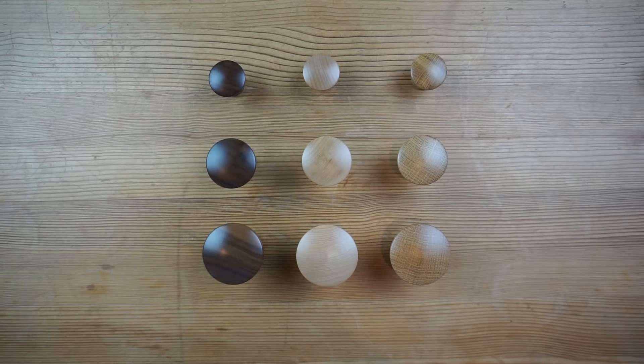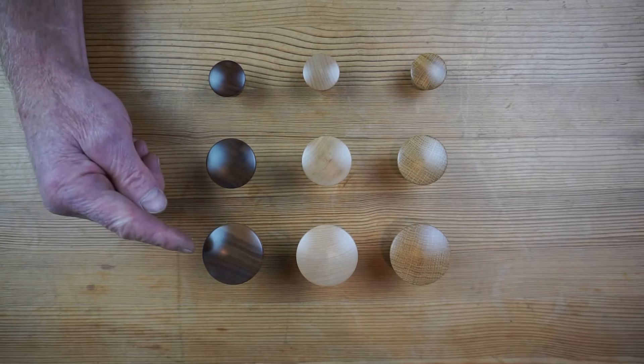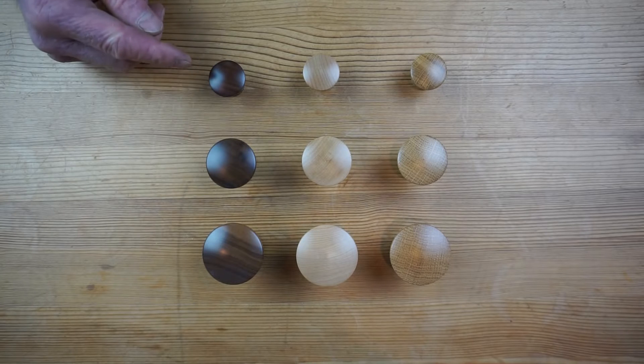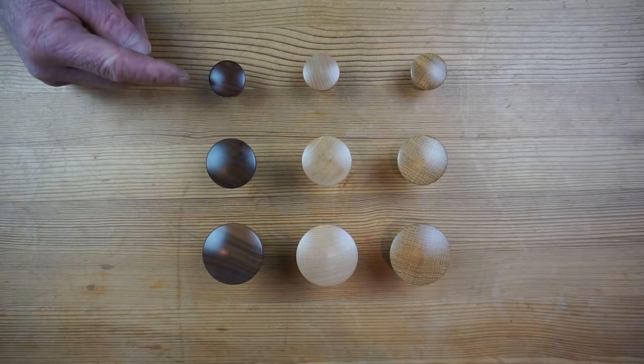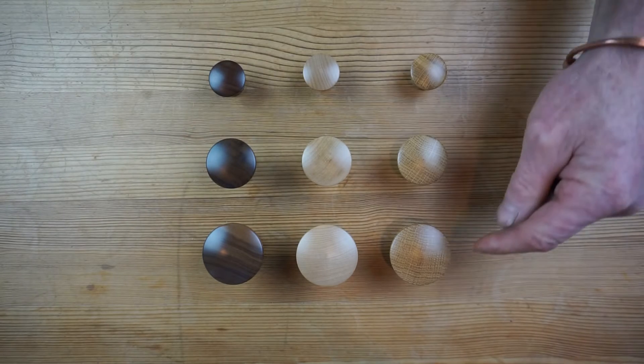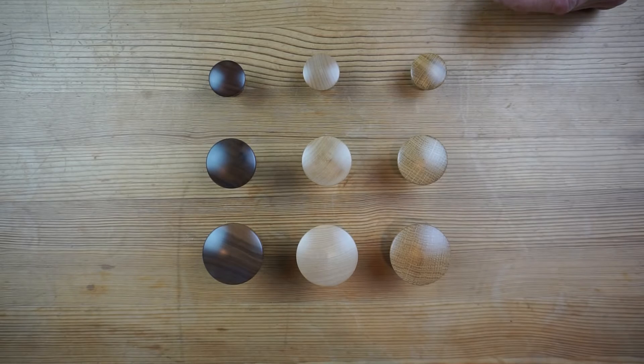This is our Teign range of wooden cabinet knobs. We offer them in three different sizes: 48 mil, 40 mil, and 30 mil, and we offer them in three different wood types being walnut, maple, and oak. This is a very modern style wooden cabinet knob.